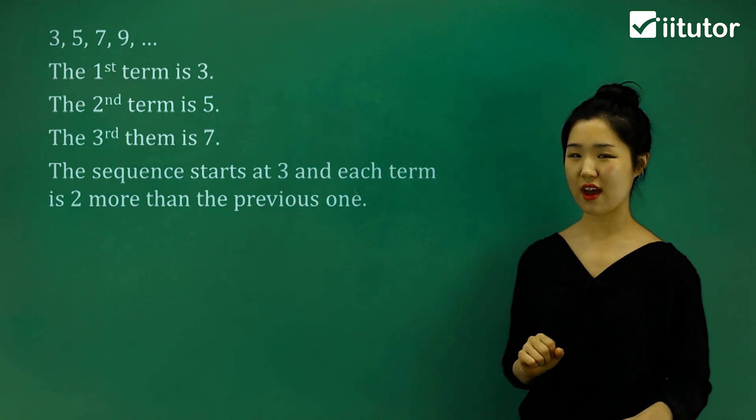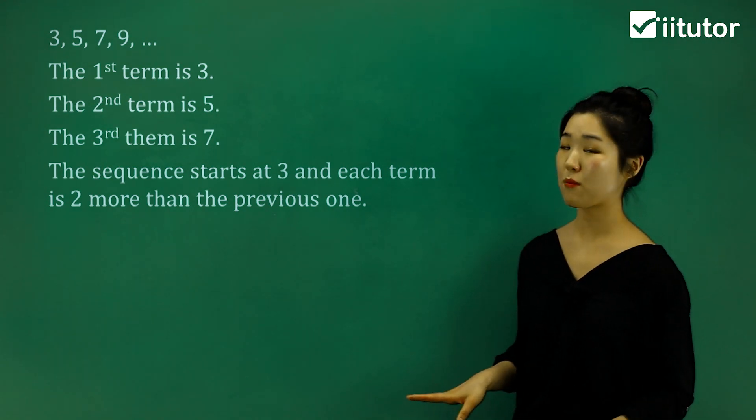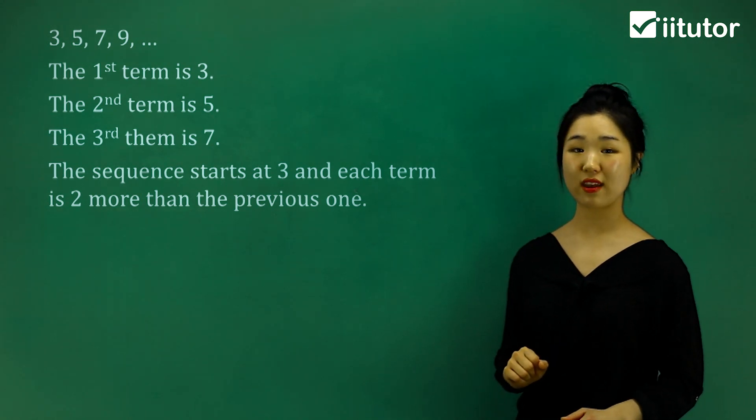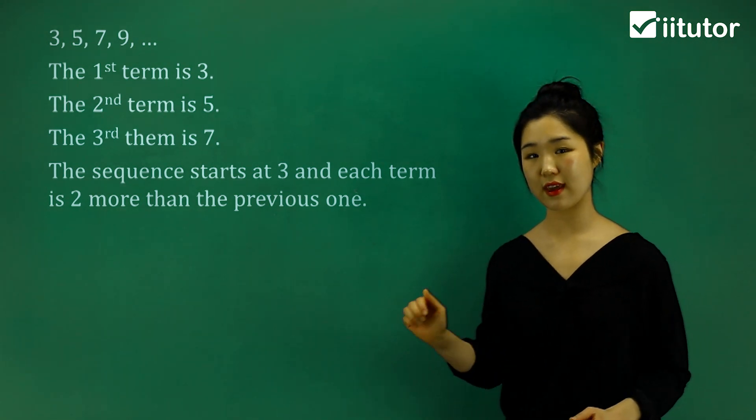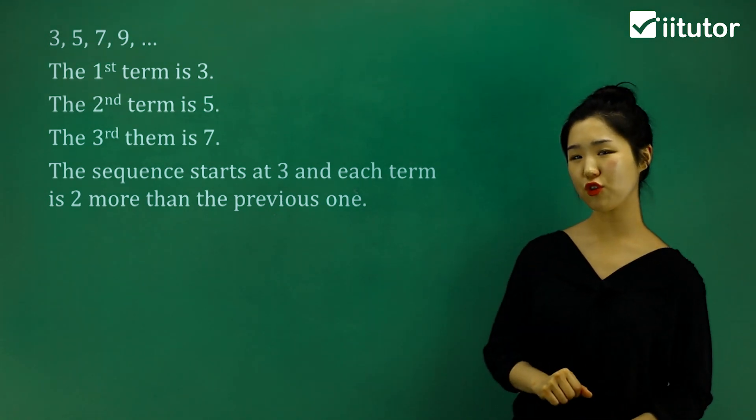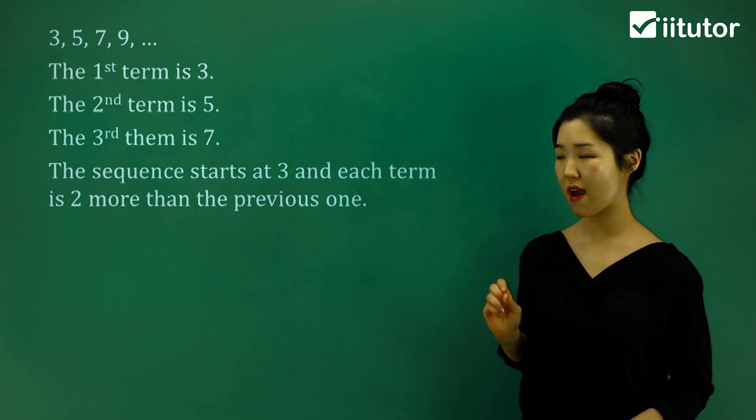So in this section, guys, it's very simple. All you have to remember is what it starts with. Try to remember what the first term is, what it starts with, and see what the pattern is. What are we doing to get every consecutive number? So in this case, it was adding 2. So those two key things I want you to remember and write it down for me.